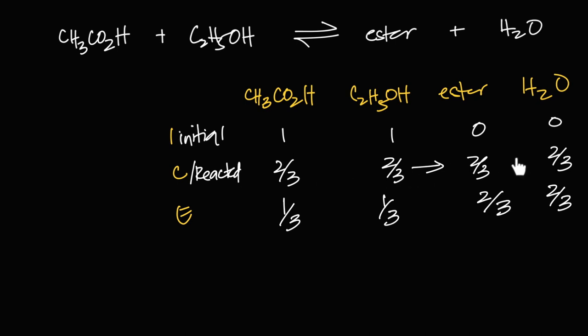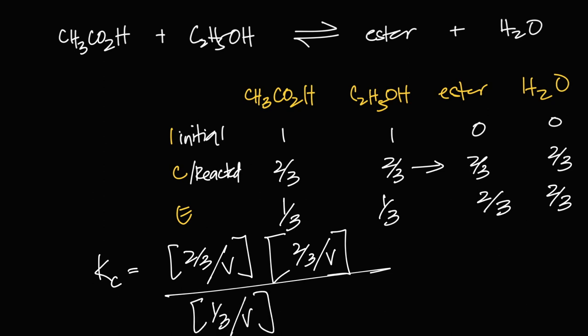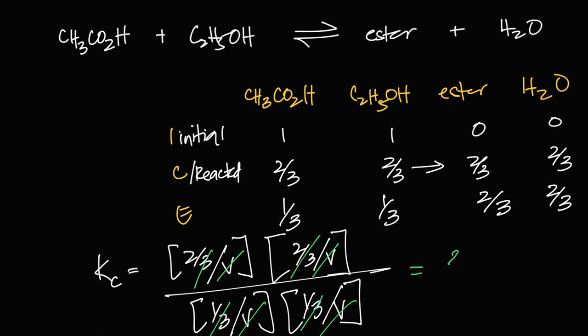At equilibrium: acid = 1 − 2/3 = 1/3, alcohol = 1/3, ester = 0 + 2/3 = 2/3, water = 2/3. Writing Kc = [ester][water] / [acid][alcohol]: each concentration is the moles divided by volume V. The V's cancel (two on top, two on bottom). Then the threes cancel too, leaving (2 × 2) / (1 × 1) = 4. So Kc = 4 for esterification.